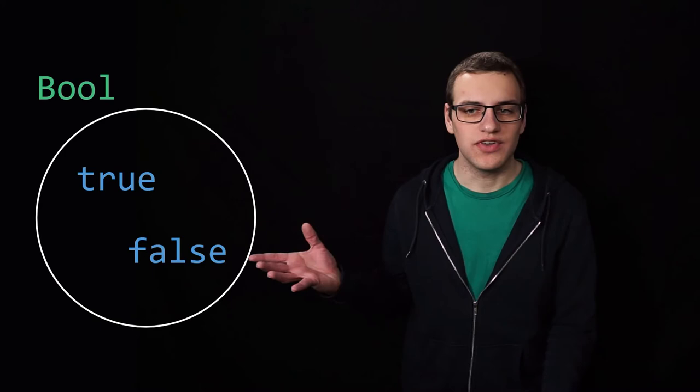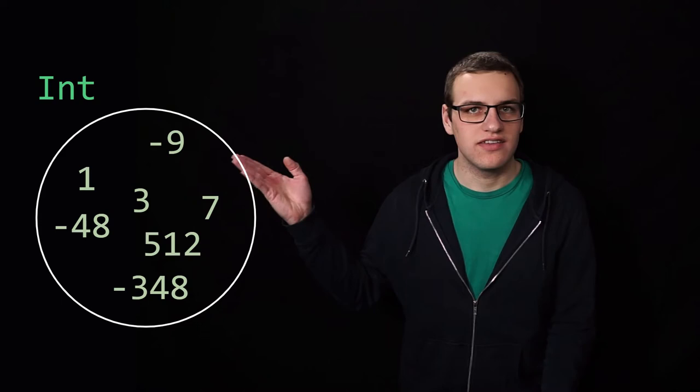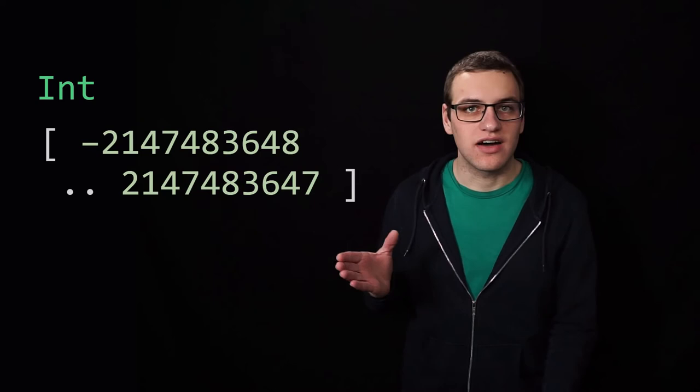For example, we can see the bool type as a set of two values. It is either true or false. Similarly, the type int is a set of all valid integer numbers, for example minus 9 or 7. In practice, however, an integer is constrained to a certain range in most programming languages.